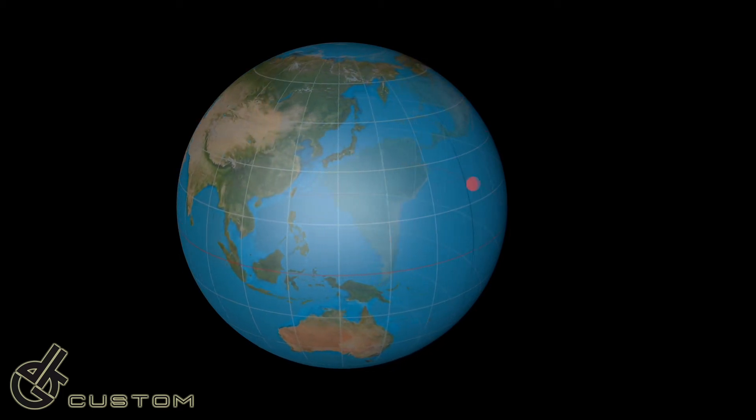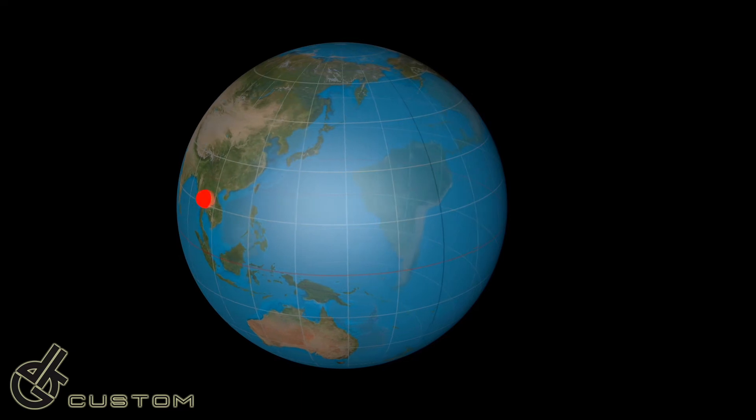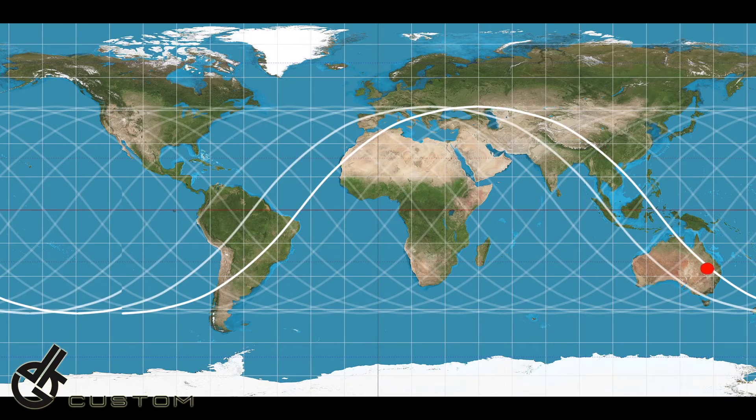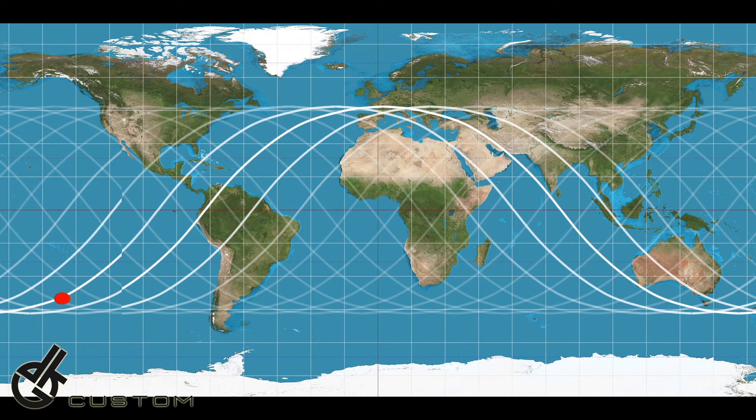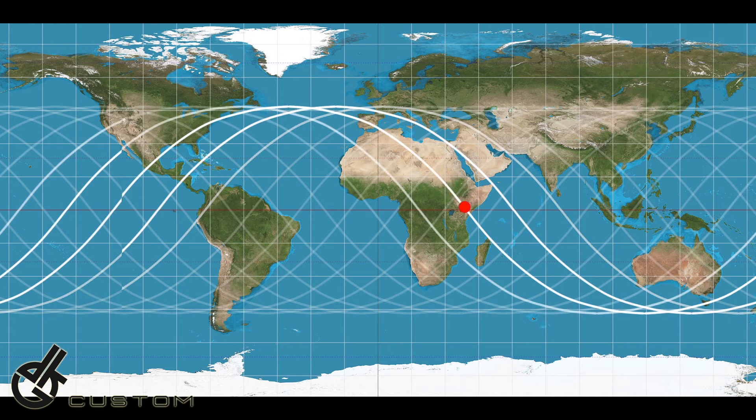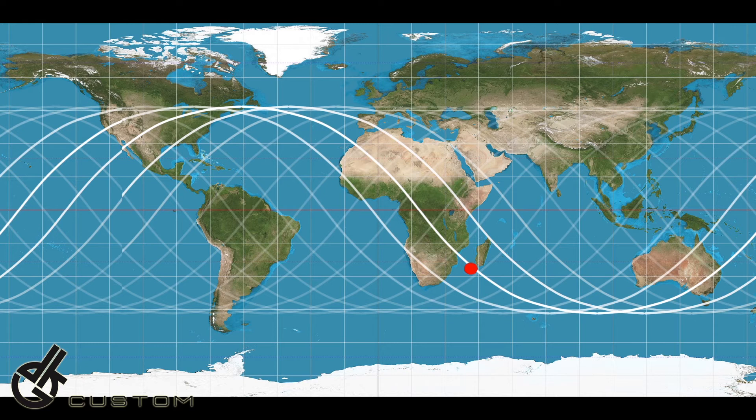Now if we take that back onto the equirectangular map, you can see how those orbit paths travel across the earth in one day. The reason the ISS travels across the entire earth is not because it's traveling around the globe laterally. It's because the earth is spinning beneath it. If the earth didn't spin, the ISS would appear above the same part of the earth every 90 minutes.